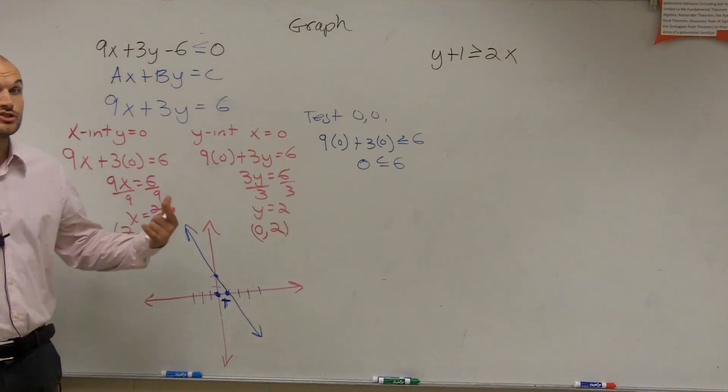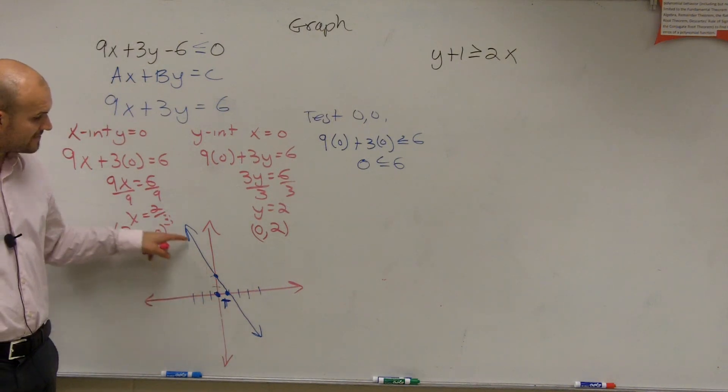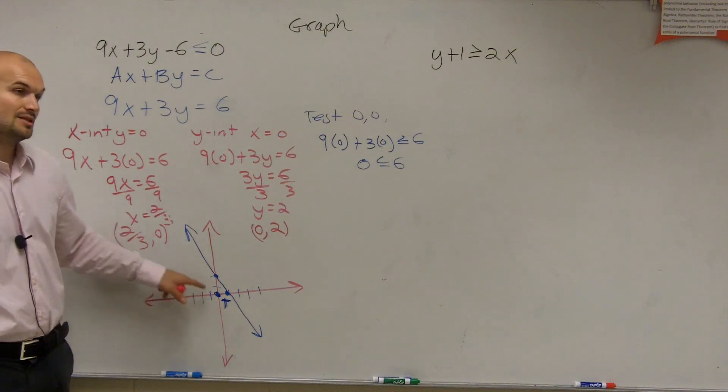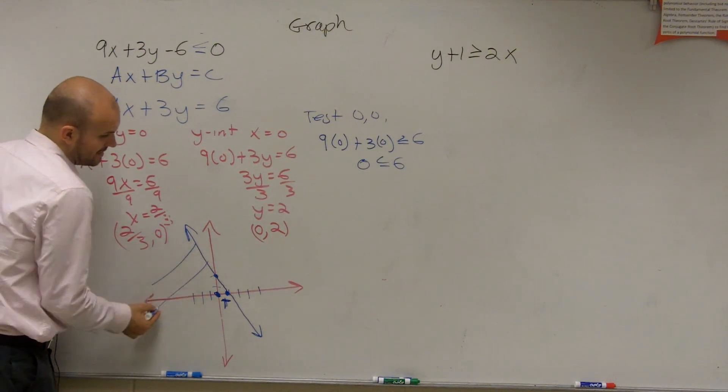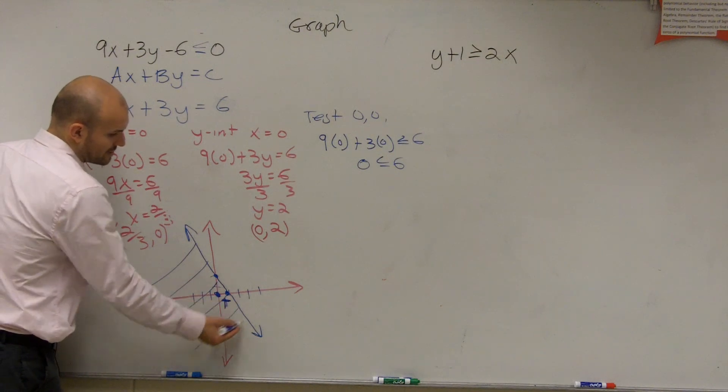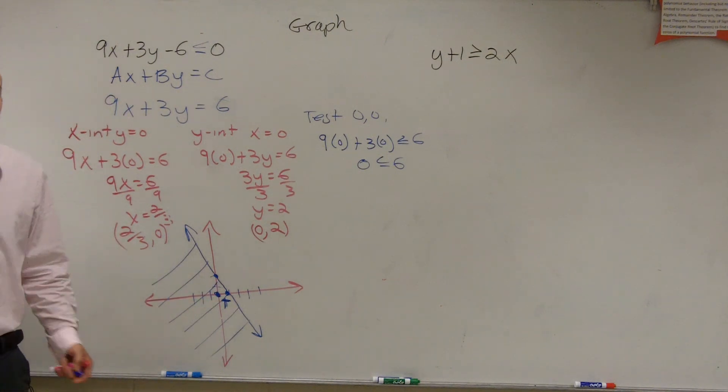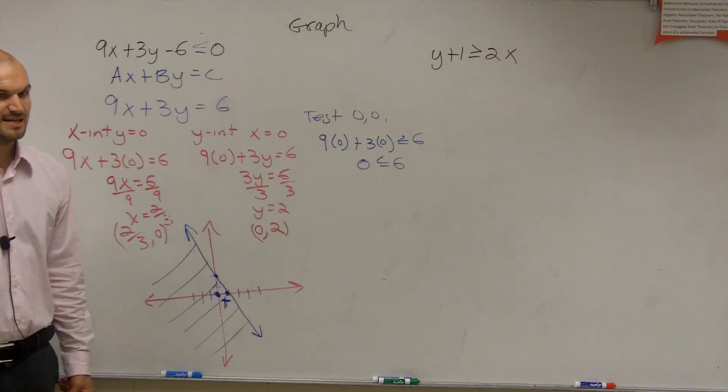So since 0, 0 is true, that means every single point to the left or below this line is also going to be true. So what we do is we shade to the side where it's true. And voila, you have your point. Okay? That's it. That's all I guess I'd do.